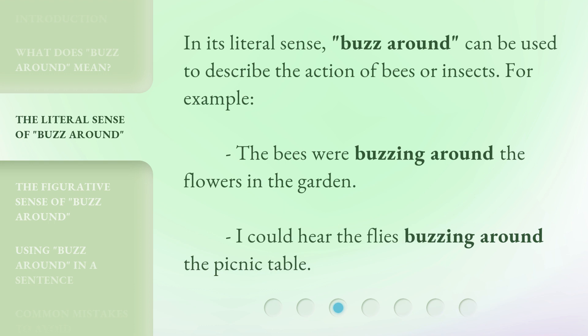In its literal sense, buzz around can be used to describe the action of bees or insects. For example: 'The bees were buzzing around the flowers in the garden.' 'I could hear the flies buzzing around the picnic table.'